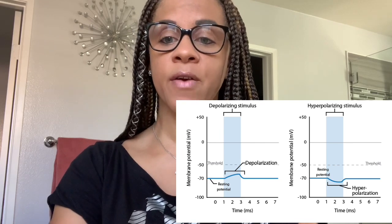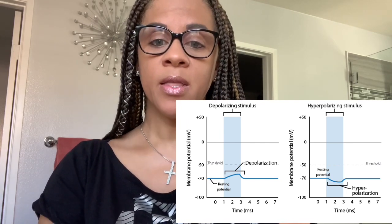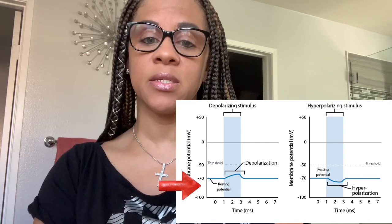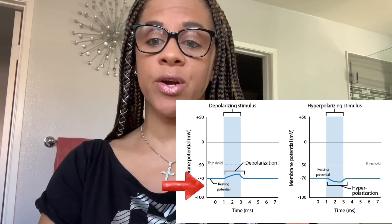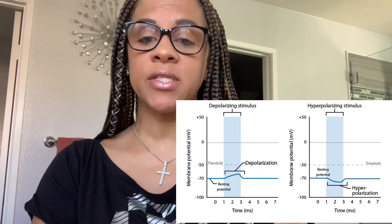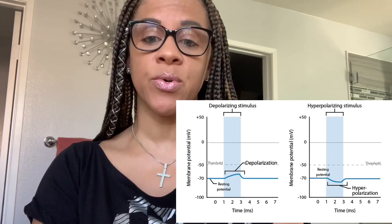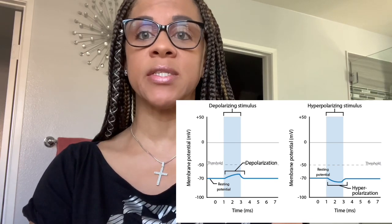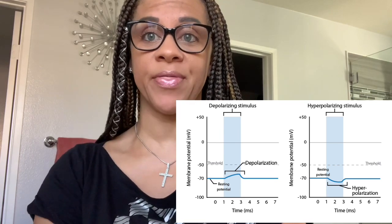There are four phases of action potential. The first one is the resting phase, where the stimulus occurs. Once that happens, the current passes the threshold of excitation, and this is what scientists like to call all or nothing.